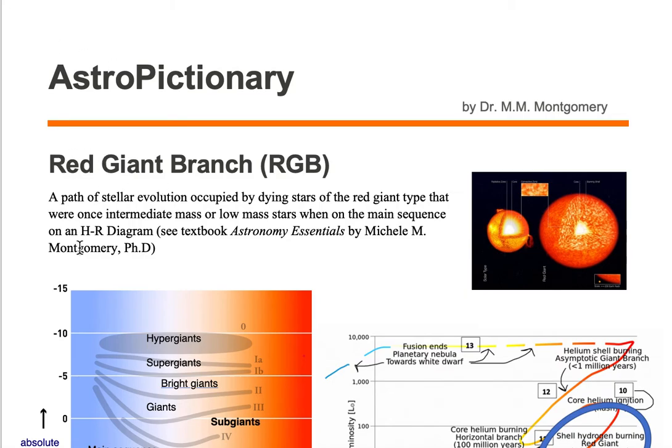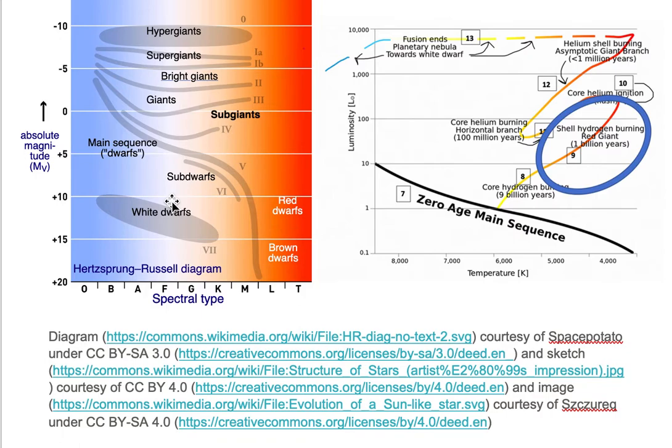Let's start with the HR diagram part of this red giant branch. Here we're looking at two examples, one on the left, one on the right, of an HR diagram.